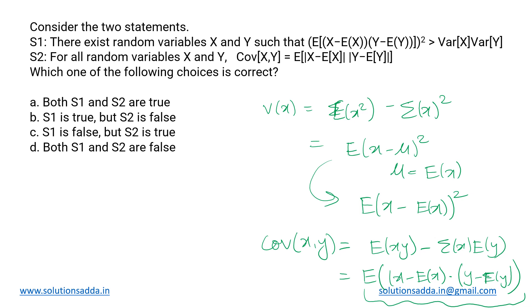Now let us look at two statements and determine which are correct. In Statement 1, the left-hand side is nothing but the formula for covariance — so it is the covariance of (X, Y) the whole square. That is the left-hand side of Statement 1, and we need to relate the covariance and the variance.